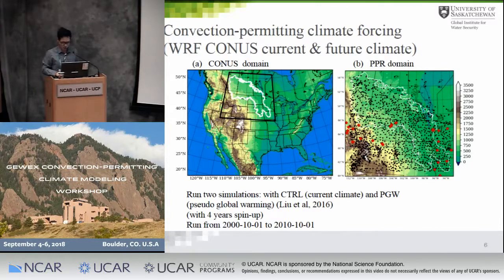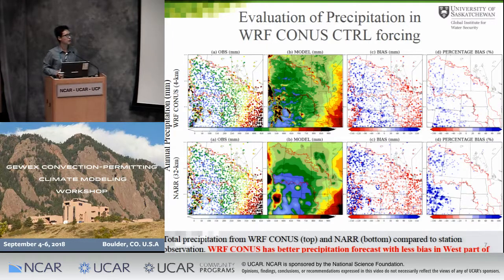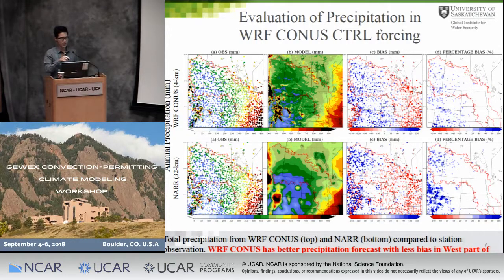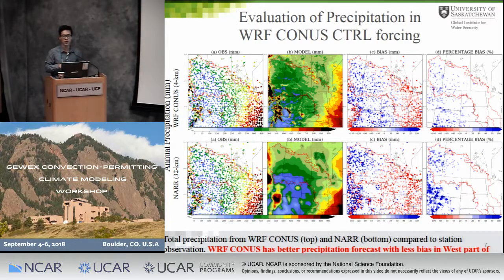To evaluate the convection permitting forcing from the CONUS in this region, I compared it to stage observations and also to a 32-kilometer reanalysis for CONUS. We find that the percentage bias — the null has a huge positive bias in the western part of over 100% precipitation — but the CONUS yearly accumulated precipitation is about 20 to 40 percent bias. So we think the CONUS simulation has better performance in precipitation, at least in this region.